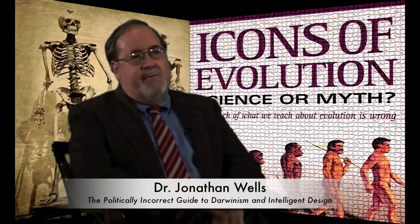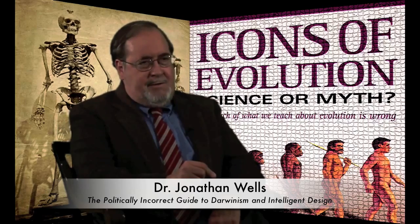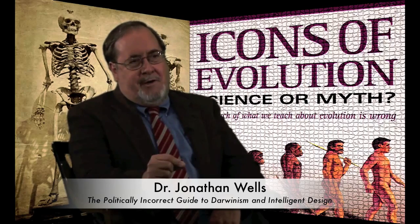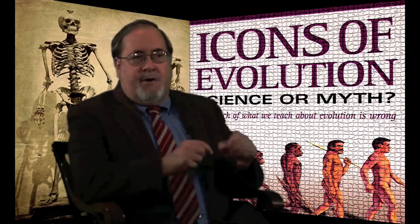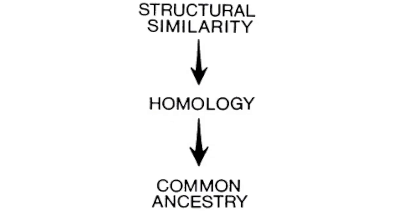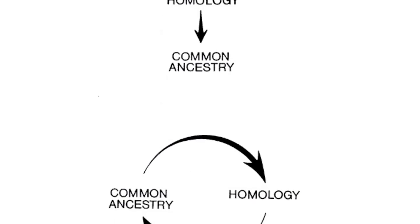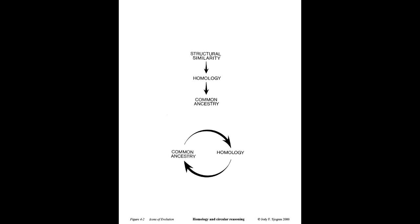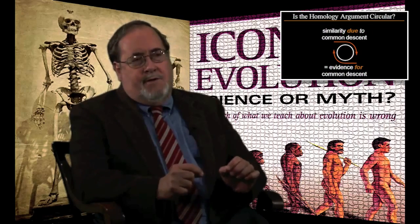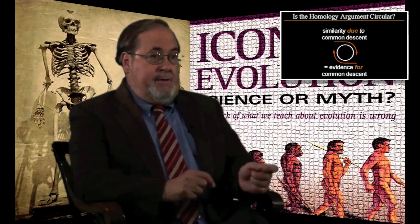Darwin's followers finessed the problem by redefining homology as similarity due to a common ancestor — so instead of similarity of structure and position, homology became similarity due to common ancestry. The problem with that move is that if you define homology in terms of common ancestry, you cannot then use it as evidence for common ancestry, because that's circular reasoning. You're essentially saying homology is due to common ancestry, which is due to common ancestry. Once you define homology in terms of common ancestry, you cannot use it as evidence for common ancestry.